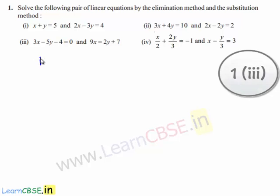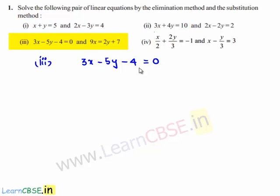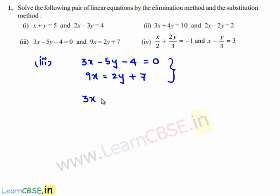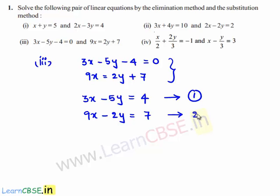Coming to the third bit: 3x minus 5y minus 4 is equal to 0, and 9x is equal to 2y plus 7. First, let us rearrange the given equations. After rearrangement, the first equation becomes 3x minus 5y equals 4, and the second equation is rearranged as 9x minus 2y equals 7. Let these be equation number 1 and equation number 2.